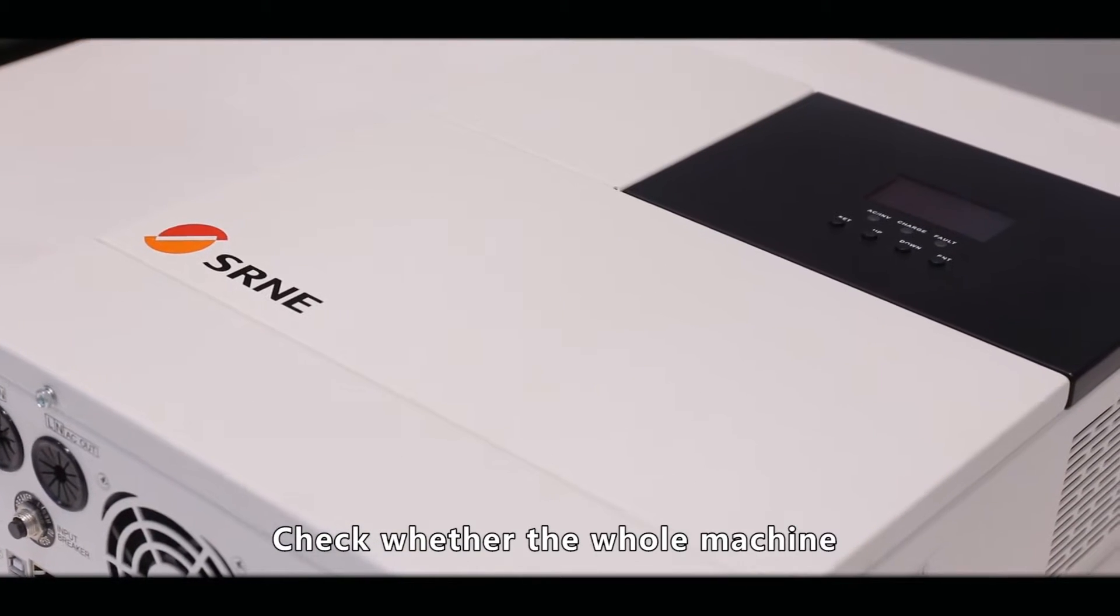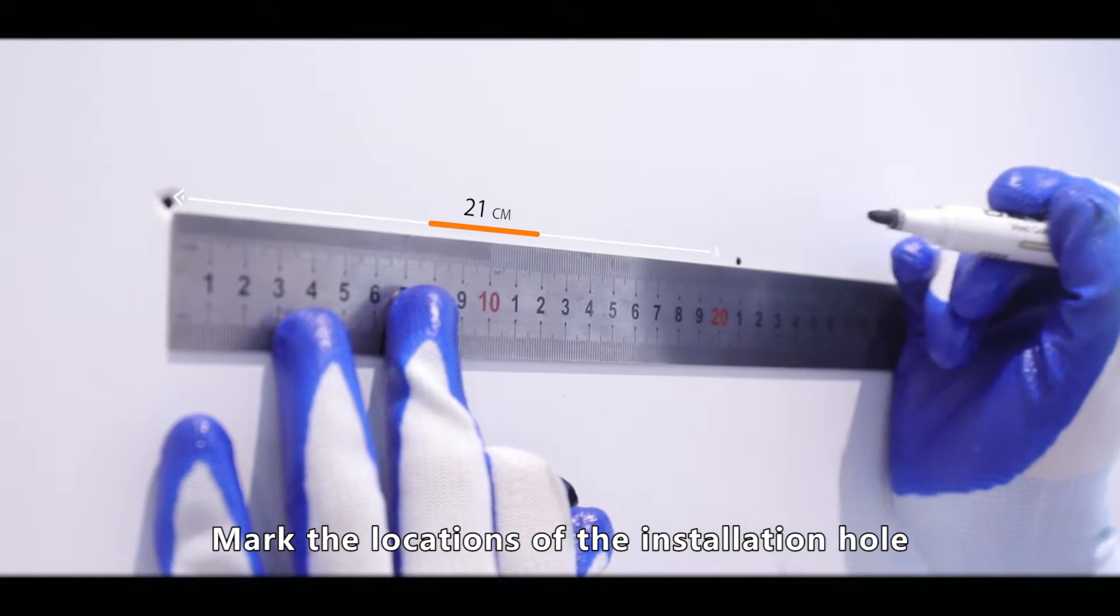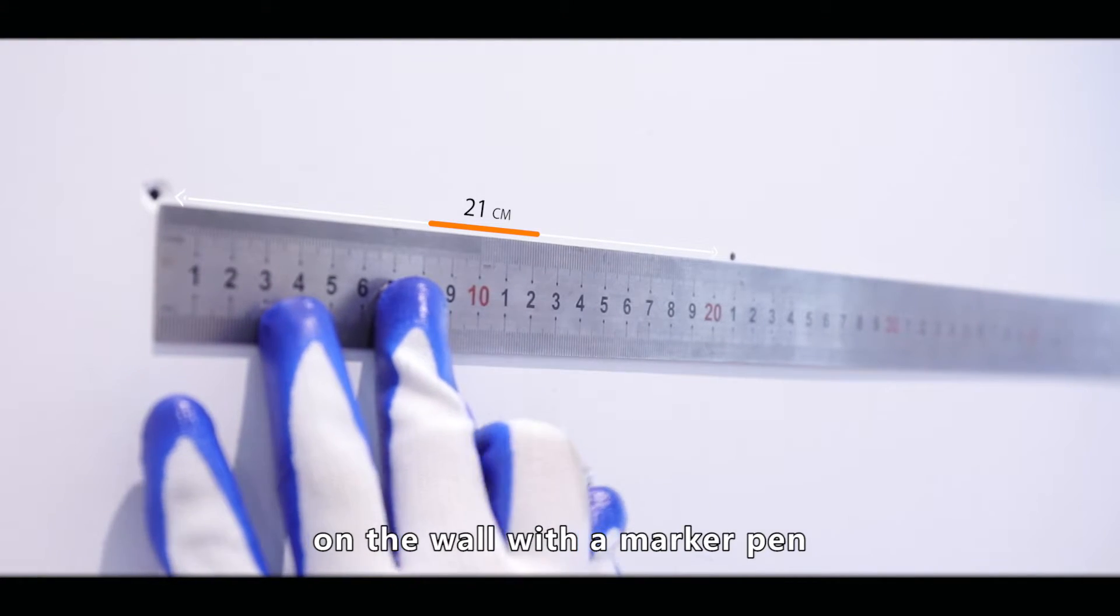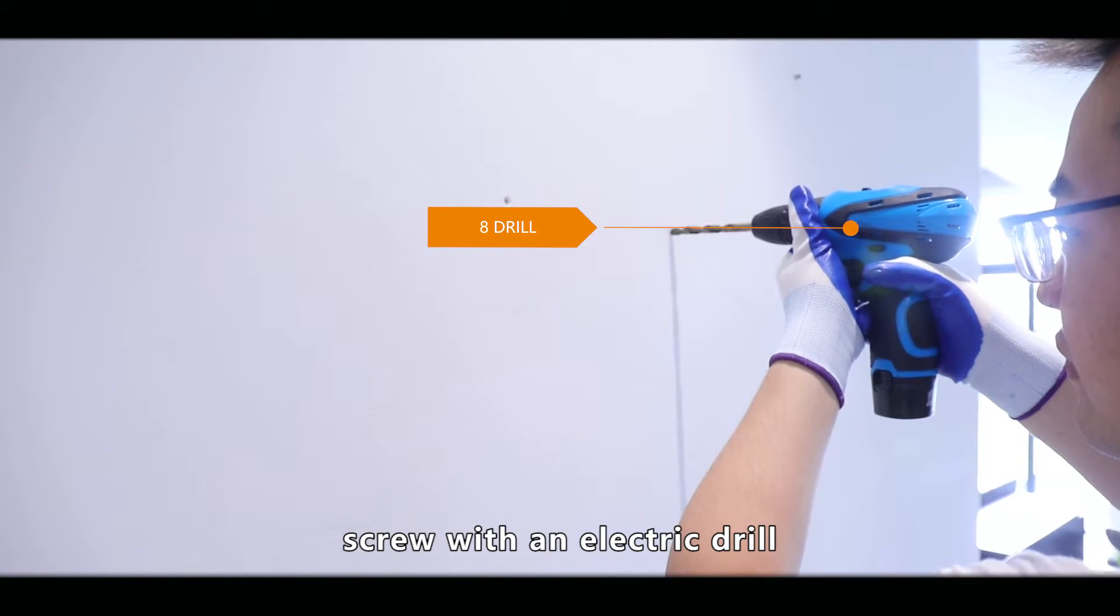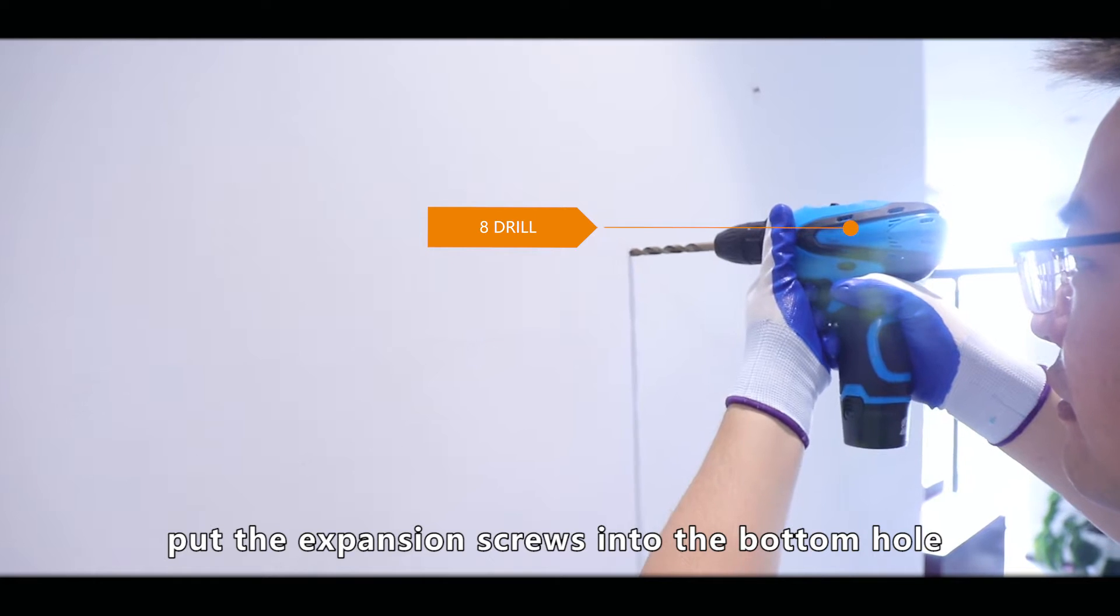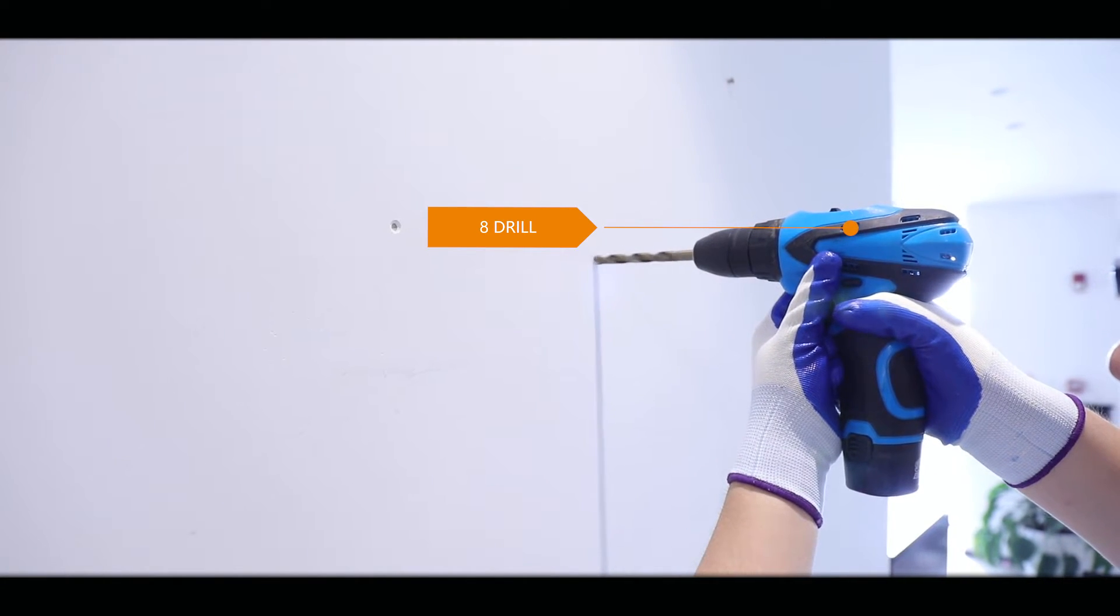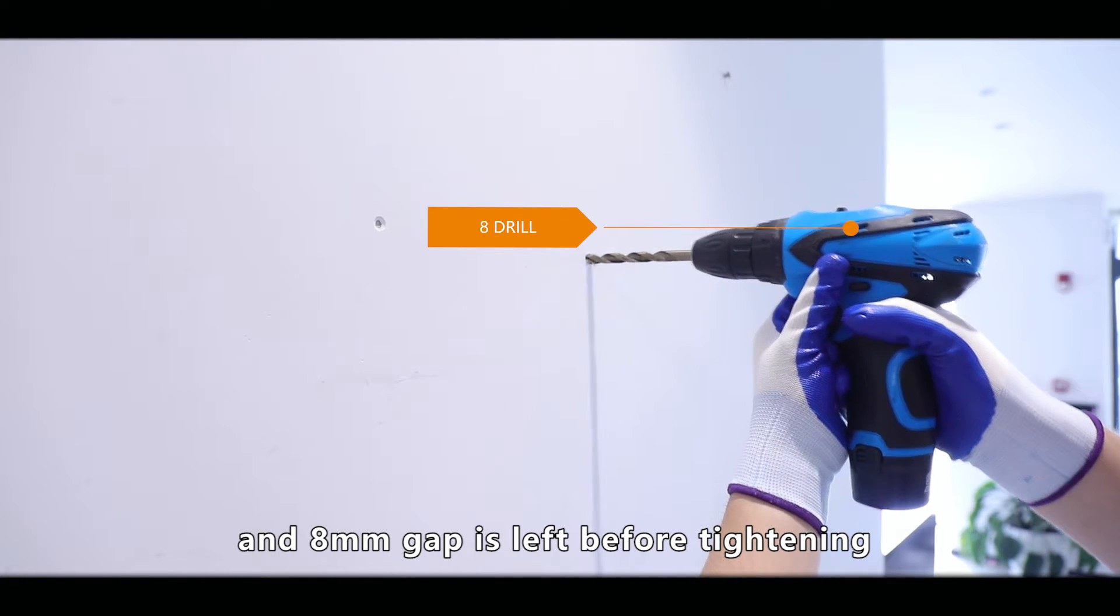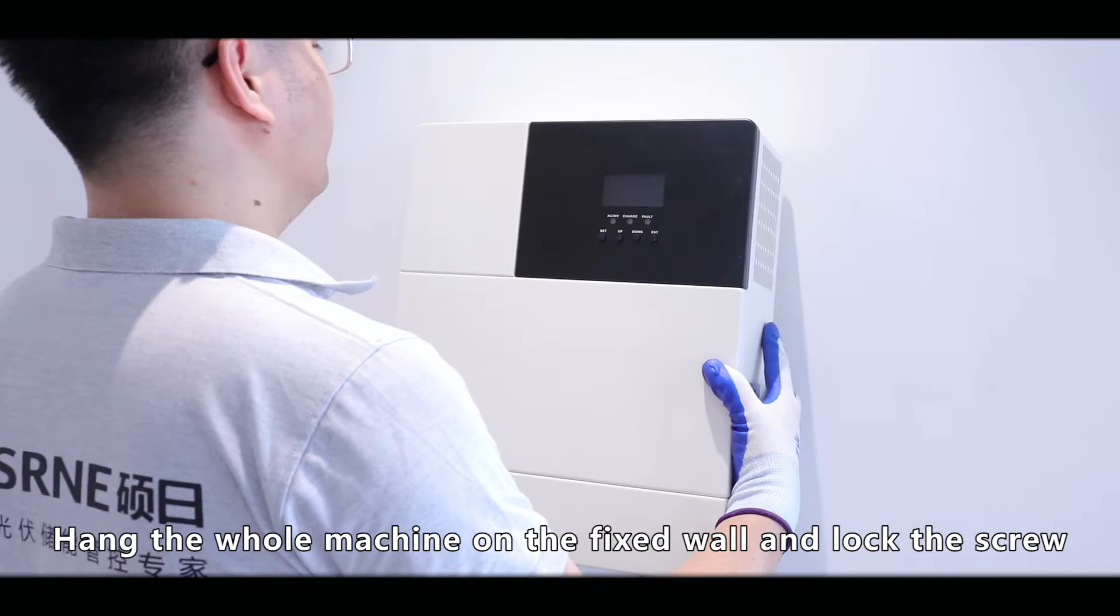Check whether the whole machine is in good condition before assembling. Mark the locations of the installation holes on the wall with a marker pen. Drill the bottom hole of the expansion crew with electric drill. Pull the expansion screws into the bottom hole and drive them into the self-tapping screw hole. An 8mm gap is left before tightening. Hang the whole machine on the fixed wall and lock the screw.